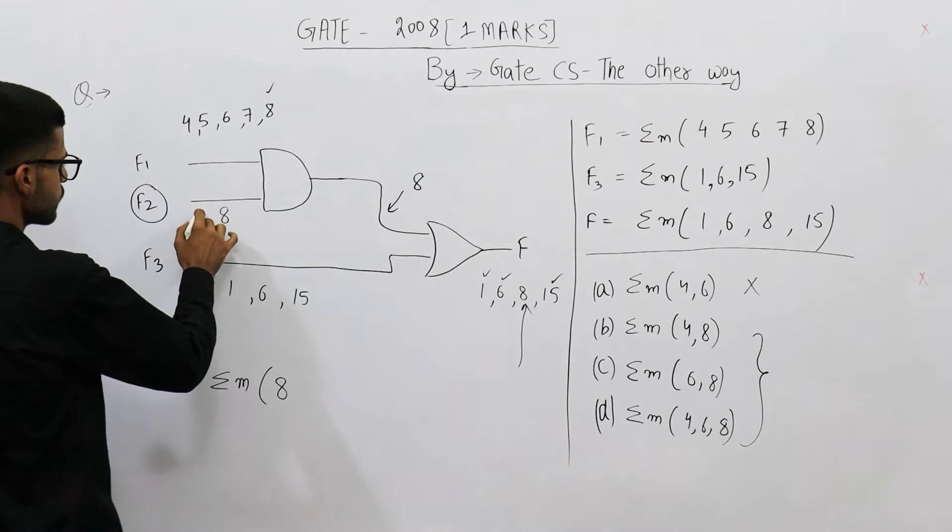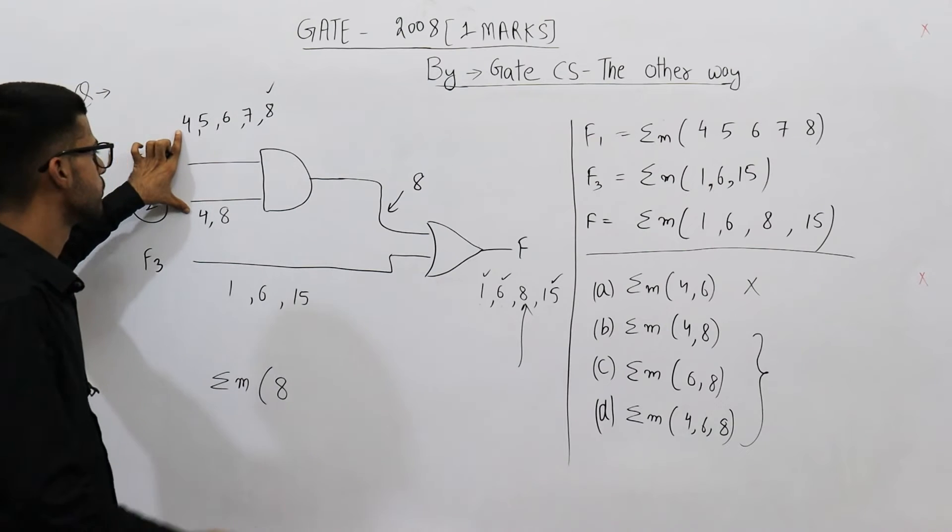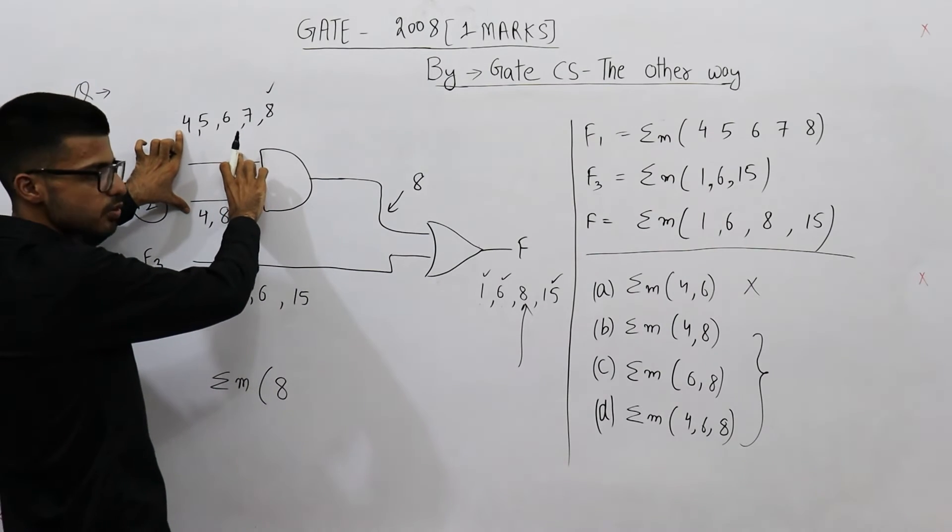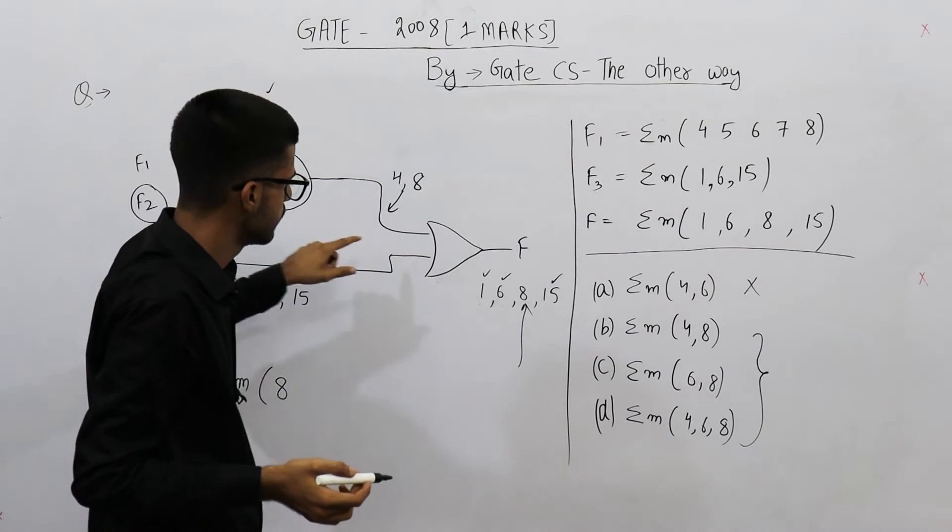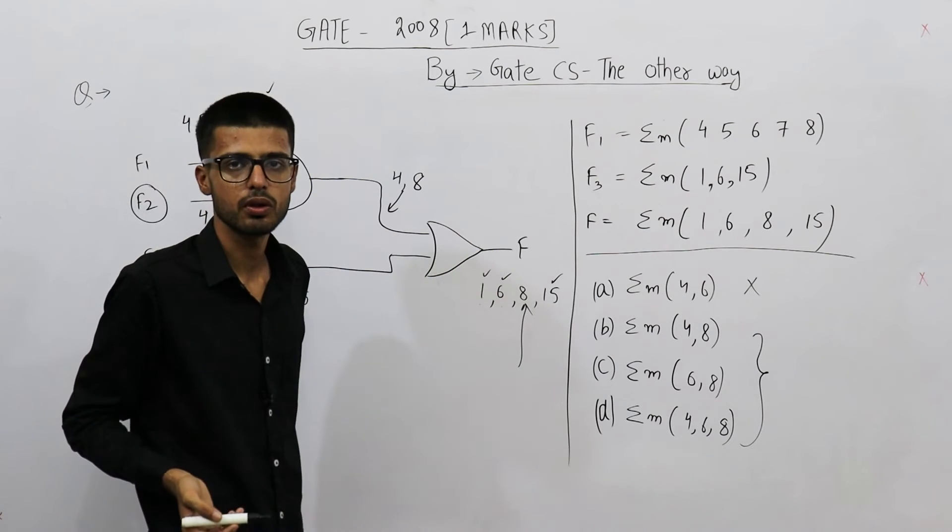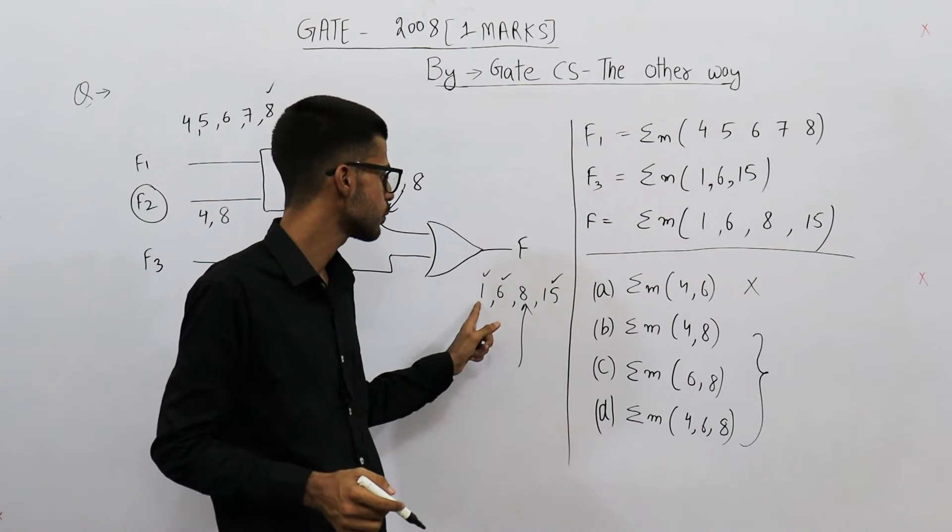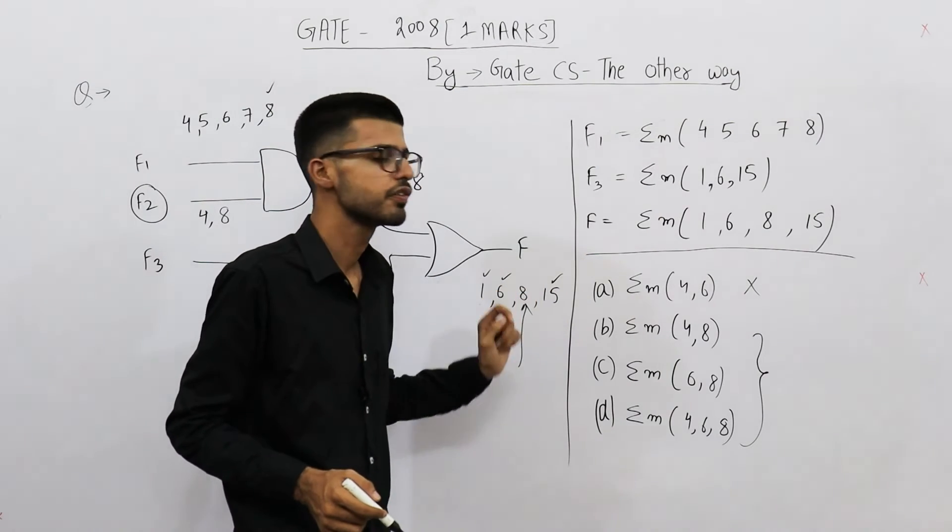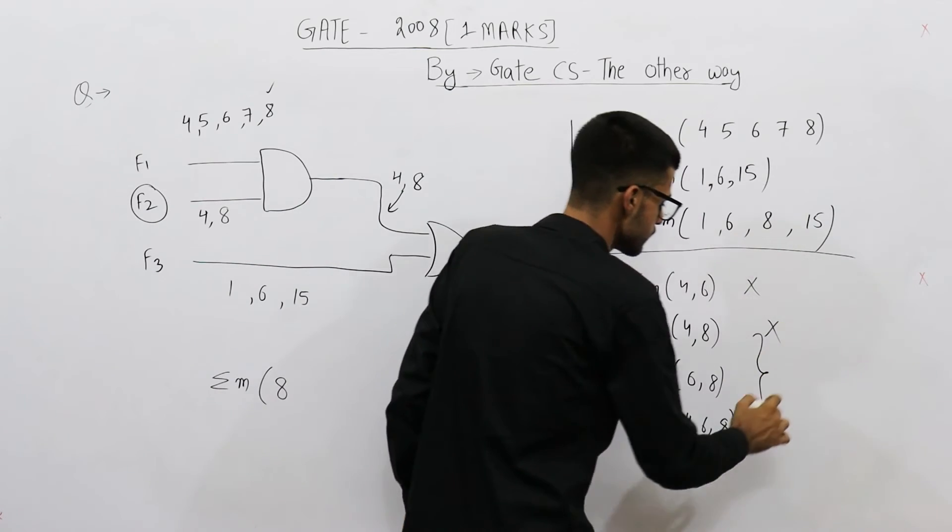Let's analyze B. If this one is 4, 8... when the input is 4, both of these wires will be high, hence output will also be high on 4. And you will get 4 in the final output also, which is not acceptable because they are saying final output is 1, 6, 8, and 15. 4 is not accepted here. That means this one is also rejected.